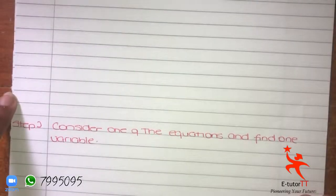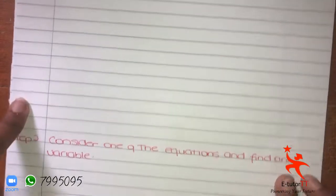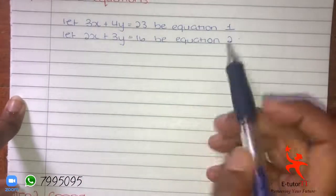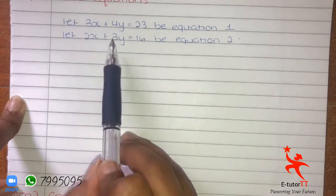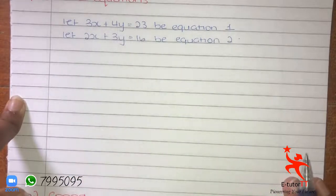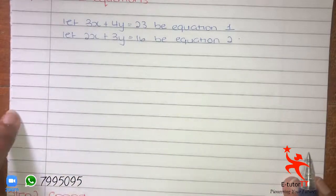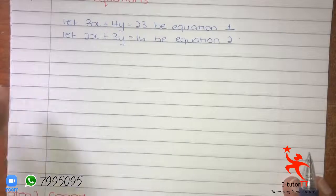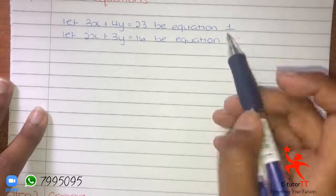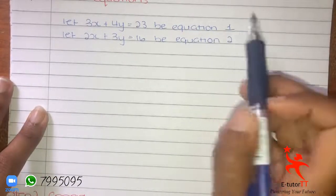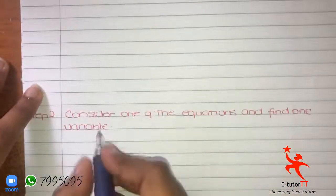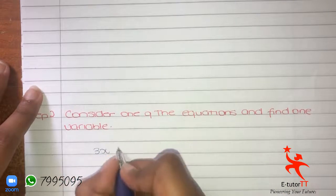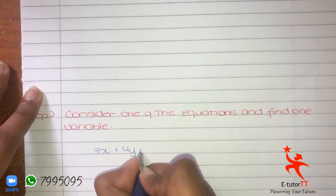Step 2 is to consider one of the equations and find one variable. Equation 1 is 3X + 4Y = 23, and equation 2 is 2X + 3Y = 16. So this step, we're going to choose one of the equations and find one variable. I'll choose equation 1 and find the variable X. So: 3X + 4Y = 23.